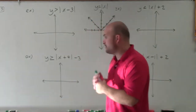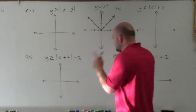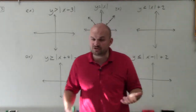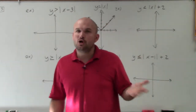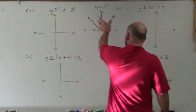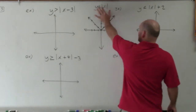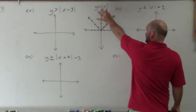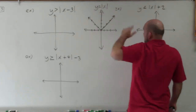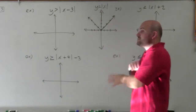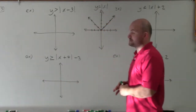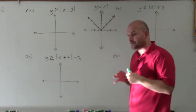The main important thing, especially when you start dealing with families of functions, is to know the parent graph. Here's the parent equation: y equals absolute value of x. And here's what the parent graph looks like — basically, without any transformations, that is what our graph is going to look like.